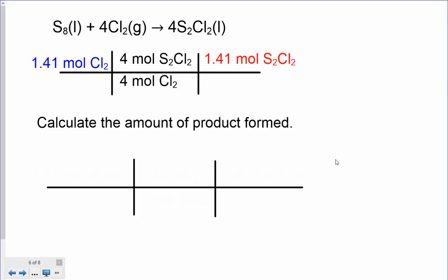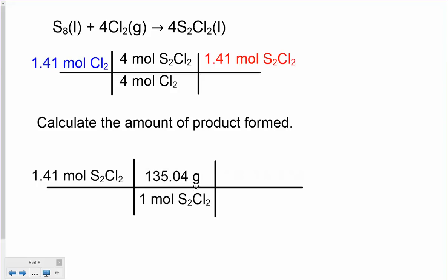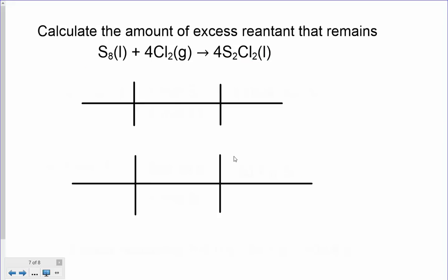They usually ask how much product is formed. From the previous calculation, we formed 1.41 moles of sulfur chloride. We want to change that to grams: one mole of sulfur chloride weighs 135.04 grams, so we get 190.4 grams of sulfur chloride. That's the amount of product formed. They sometimes also ask about the excess reactant — calculate how much sulfur is left over.